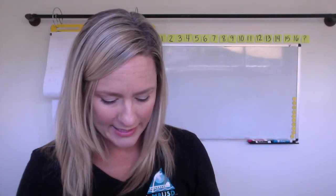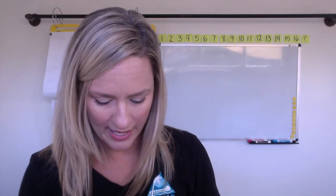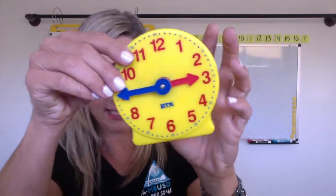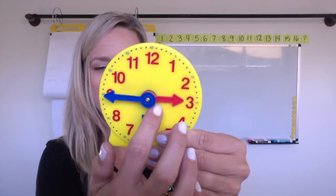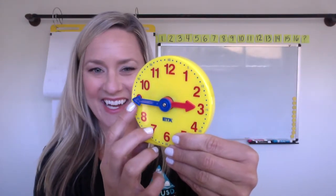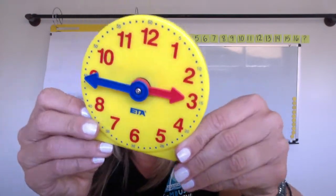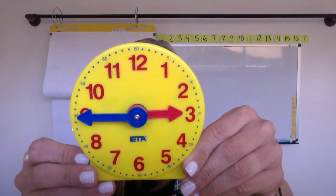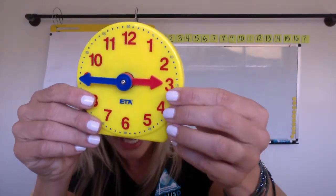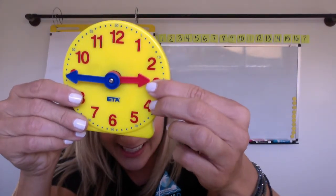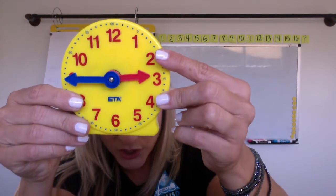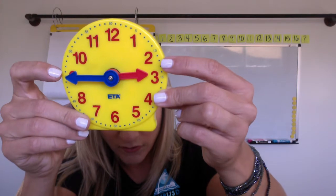Maybe you also knew that when you have the minute hand pointing like this straight out to the nine here, that means 45 minutes have passed. So see how this is pointing almost exactly to the three. It's not quite there yet, though. It's not there yet. So this means it's 2:45.